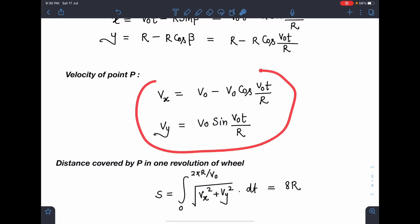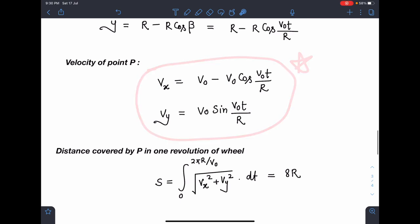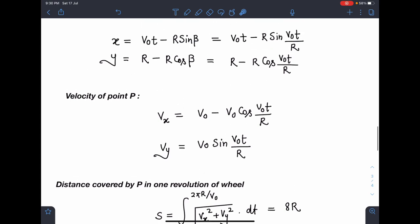Distance covered in one revolution—I'm not solving it here, so you can just check. If you do that integral from 0 to 2πR/v₀ of √(vₓ² + vᵧ²), this is the speed of P, dt, that is going to give us 8R. So students, please do that problem and do these calculations. It will give you some more confidence in remembering these results.